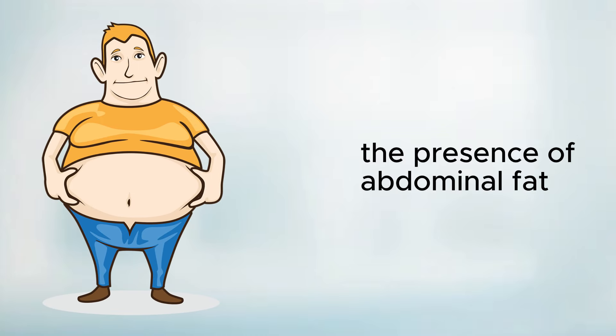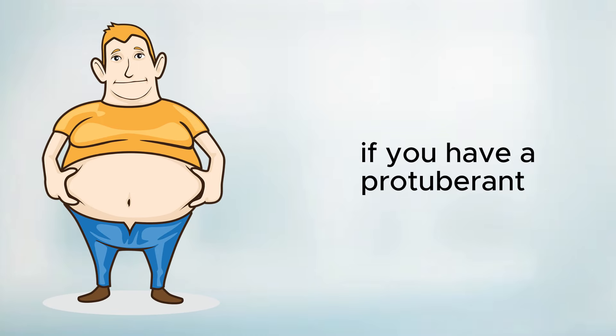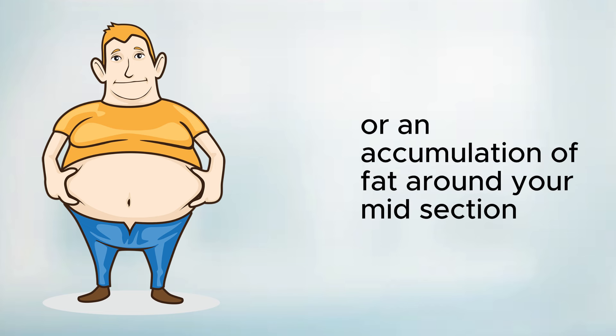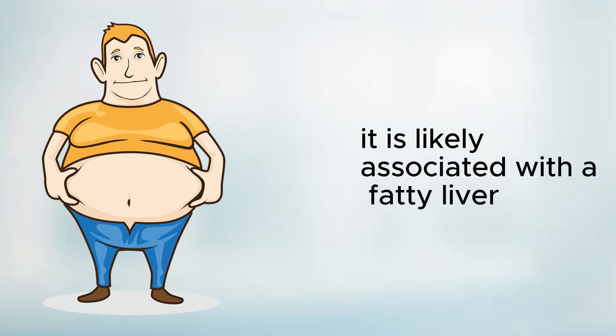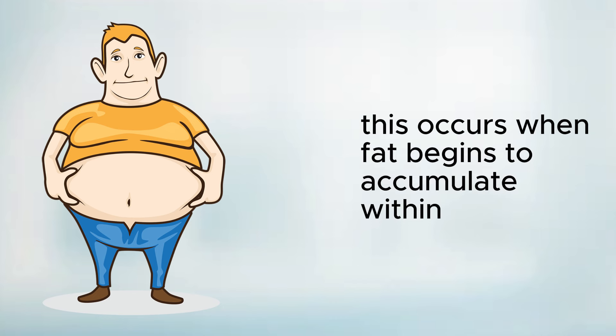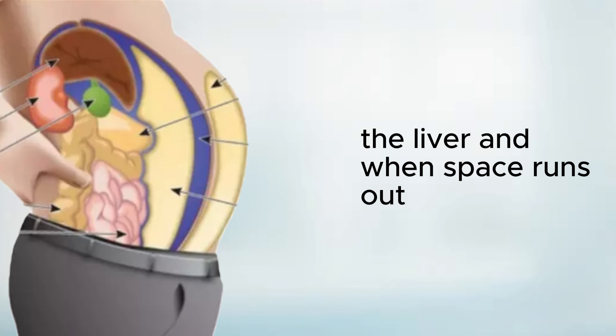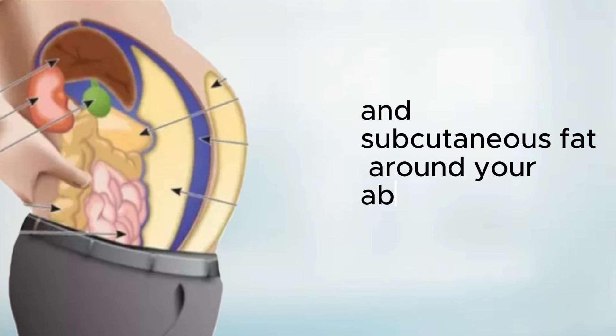The second and most prevalent sign is the presence of abdominal fat. If you have a protuberant, pot belly-like abdomen or an accumulation of fat around your midsection, it is likely associated with a fatty liver. This occurs when fat begins to accumulate within the liver, and when space runs out, it extends outward, forming visceral and subcutaneous fat around your abdominal region.